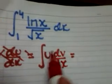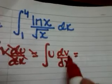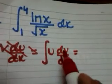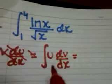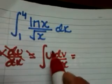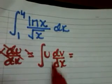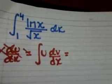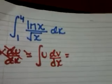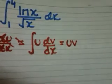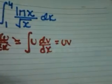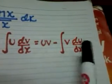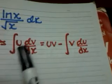The formula for integration of two functions considers one function as u and the other as dv by dx. We will come to that in a while. This equals uv minus the integral of v times du by dx.